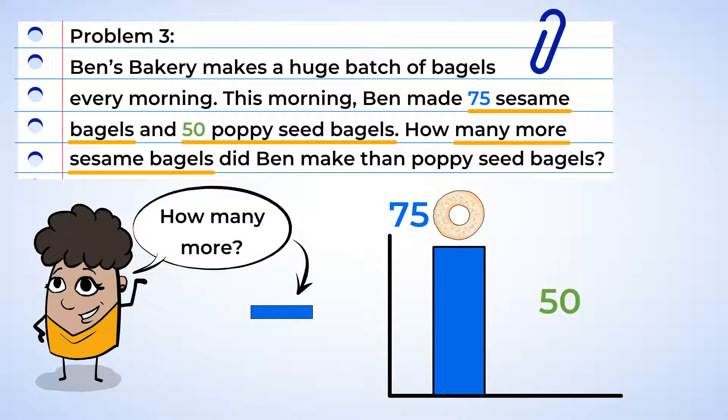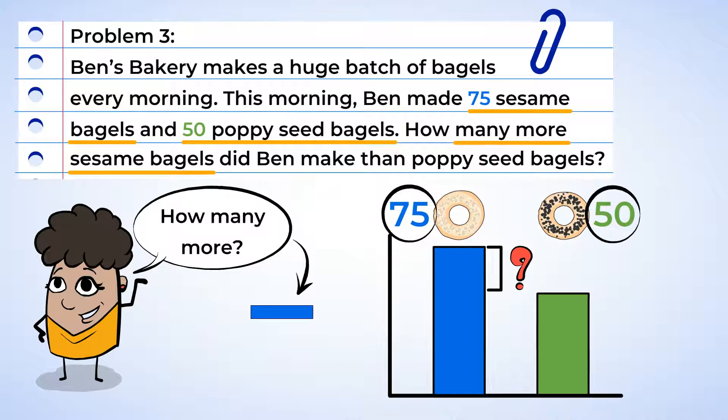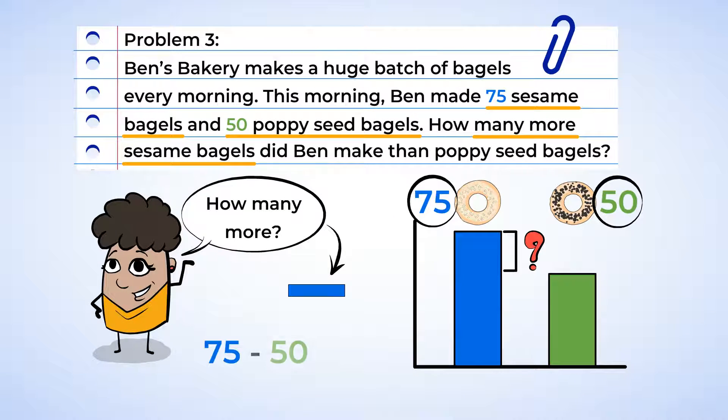Here are the 75 sesame bagels and the 50 poppy seed bagels. We want to know how many more sesame seed bagels Ben made. This is the amount we want to find right here. We want to compare the number of bagels. So we start with all of the sesame bagels. Then we subtract all of the poppy seed bagels. 75 minus 50. This leaves us with 25. But what does 25 represent? It means that there are 25 more sesame bagels than poppy seed bagels.